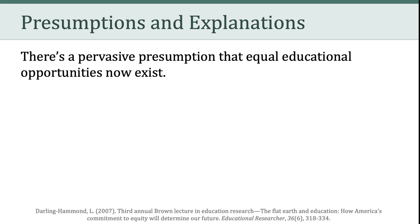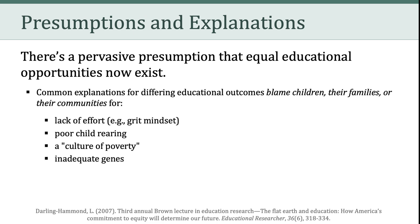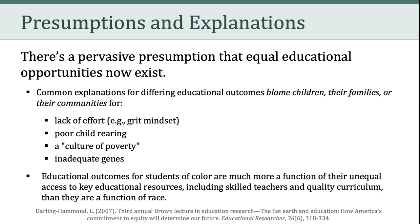As Darling-Hammond suggests in her analysis of the 2003 PISA results, we are not living up to those ideals. What are the presumptions and explanations that are often used to explain these results? Darling-Hammond argues there's a pervasive presumption that equal educational opportunities now exist. She explains this by arguing that common explanations for differing educational outcomes blame children or their families or their communities — for a lack of effort, for poor child-rearing, a culture of poverty, and inadequate genes. Those are some of the different reasons that have been used to explain these differing educational outcomes.